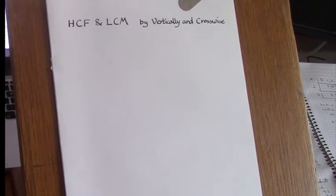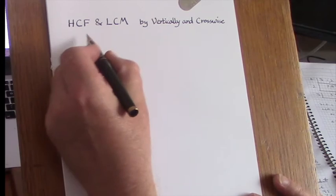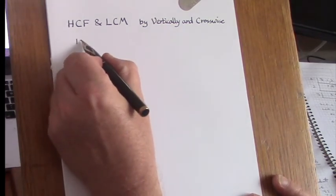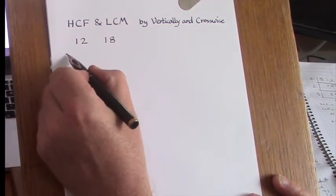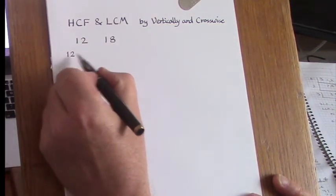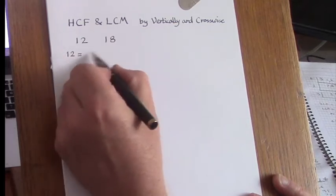But first of all, I'll just run over the basic idea of finding HCFs and LCMs with a simple example like 12 and 18. The first conventional method is to break down 12 into its prime factors.